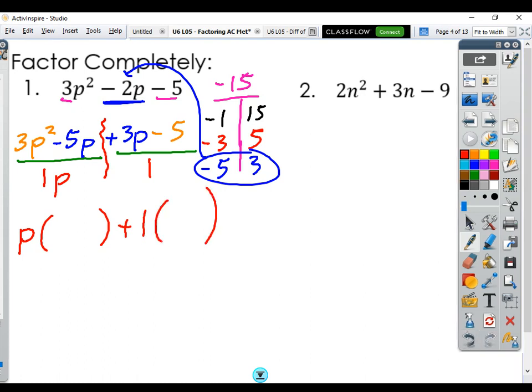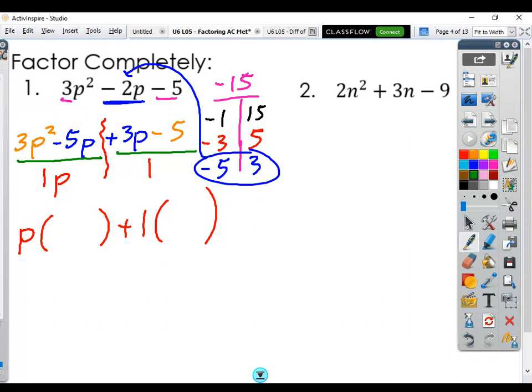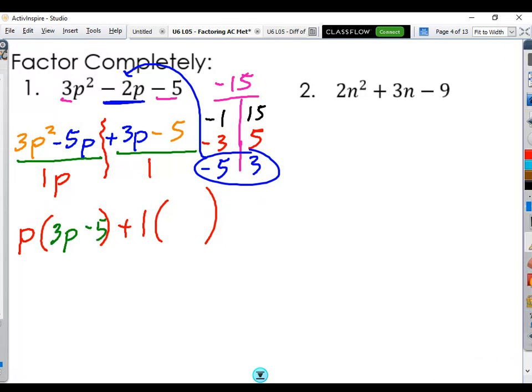All right. My GCFs are out front. If I divide, all I'm left with here is 3p minus 5. And again, when you divide by 1, nothing happens. 3p minus 5.